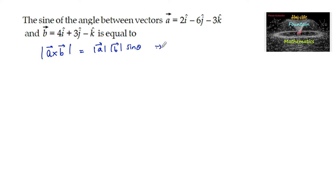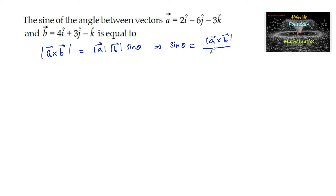So which implies that the sine of the angle between the two vectors, sin θ, is equal to |a × b| divided by |a| times |b|.